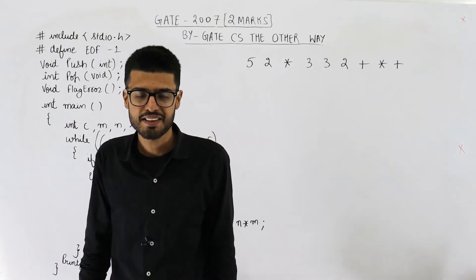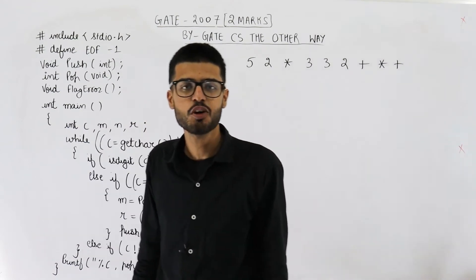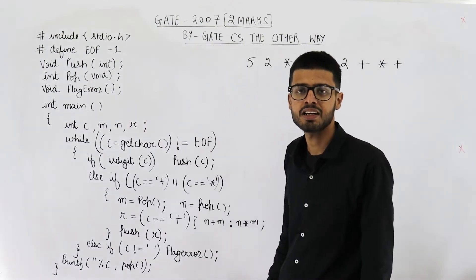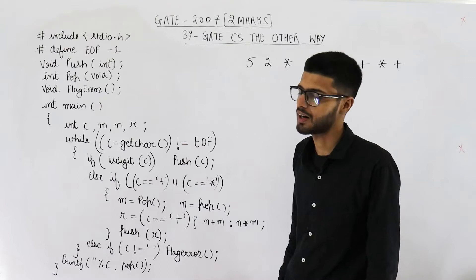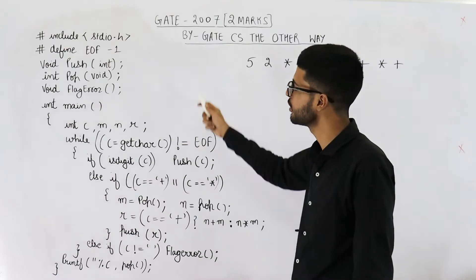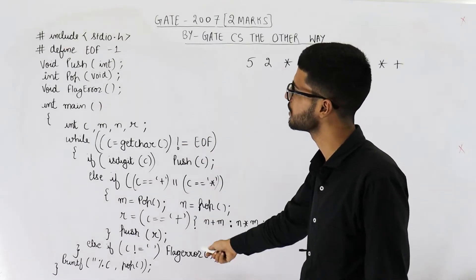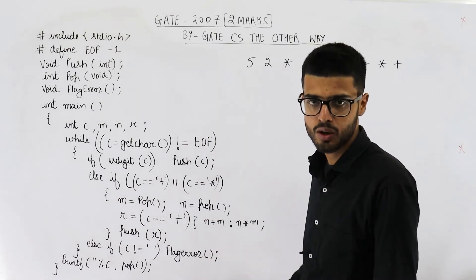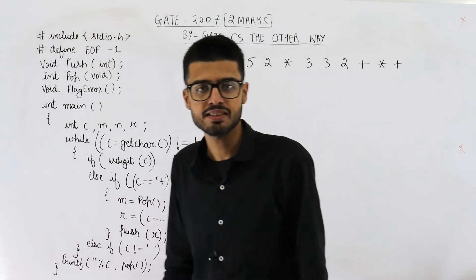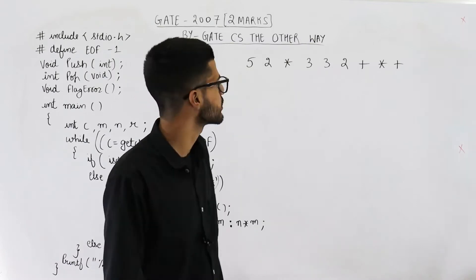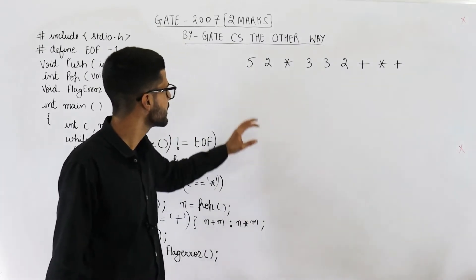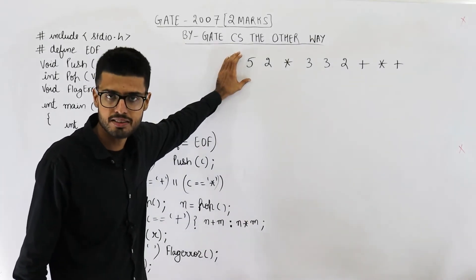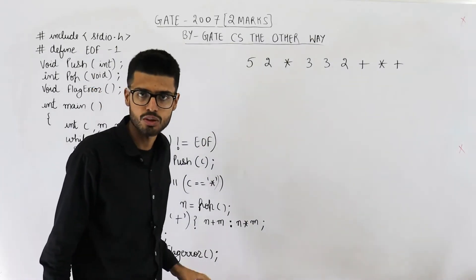Hello dear students, welcome back. This question is from the GATE 2007 exam and it is for two marks. You need to find what will be the output of this program. In the statement of the question, they have mentioned the input that is given to this code.